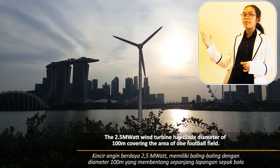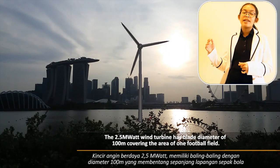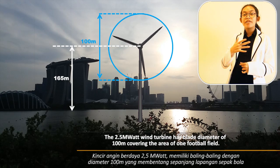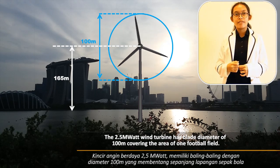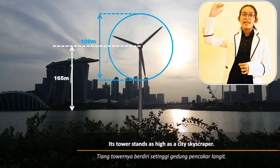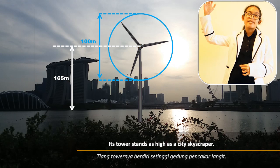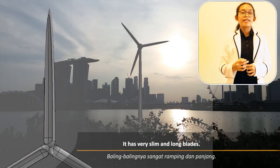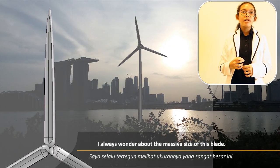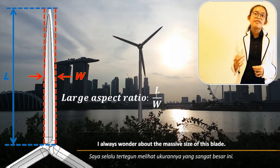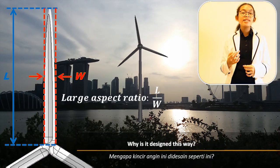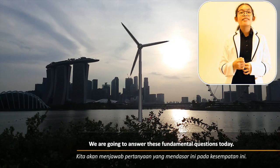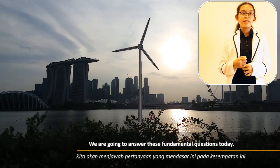The 2.5 megawatt wind turbine has a blade diameter of 100 meters, covering the area of one football field. Its tower stands as high as a city skyscraper. It has very slim and long blades. I always wonder about the massive size of this blade — why is it designed this way? We are going to answer these fundamental questions today.